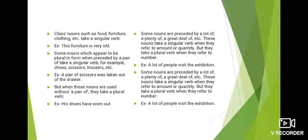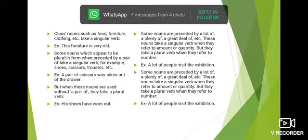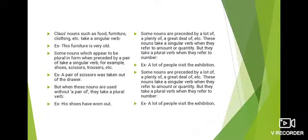Class nouns such as food, furniture, clothing, etc. take a singular verb. जो class nouns होते हैं — जो पूरे एक group को represent करते हैं — उनके लिए singular verb use होती है। Example: 'This furniture is very old.' Furniture एक class noun है जो सारी चीजों को collectively represent करता है, इसलिए singular verb 'is' लगाई है।